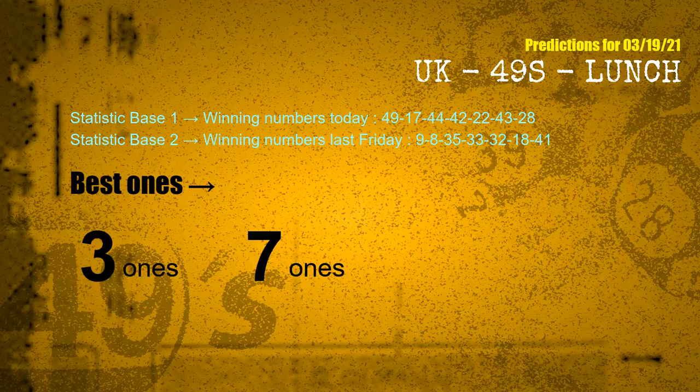According to the statistics above, with winning numbers today 49, 17, 44, 42, 22, 43, 28, and winning numbers last Friday 09, 08, 35, 33, 32, 18, 41 — the frequent following ones are 3 ones and 7 ones. Besides following ones, we need more clues for winning numbers of the next draw, so we will find out the most drawn ball color through today's result.